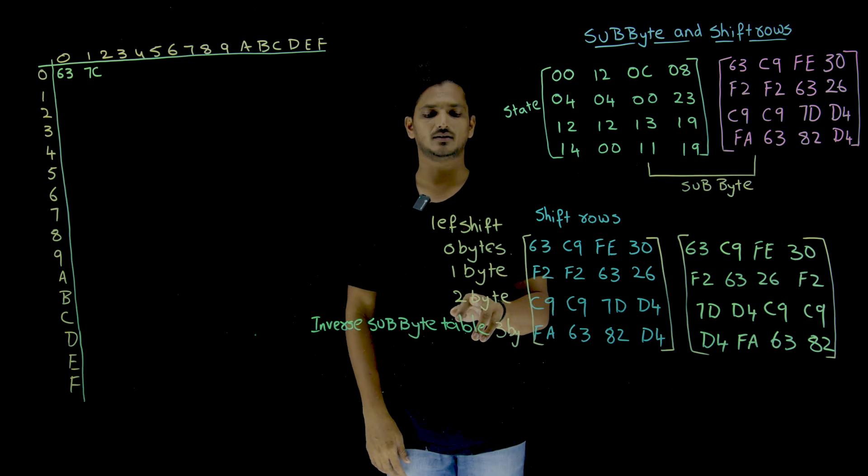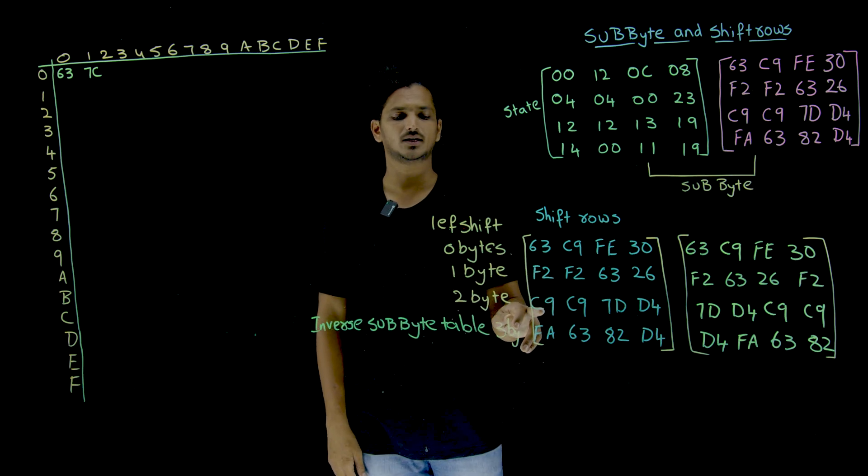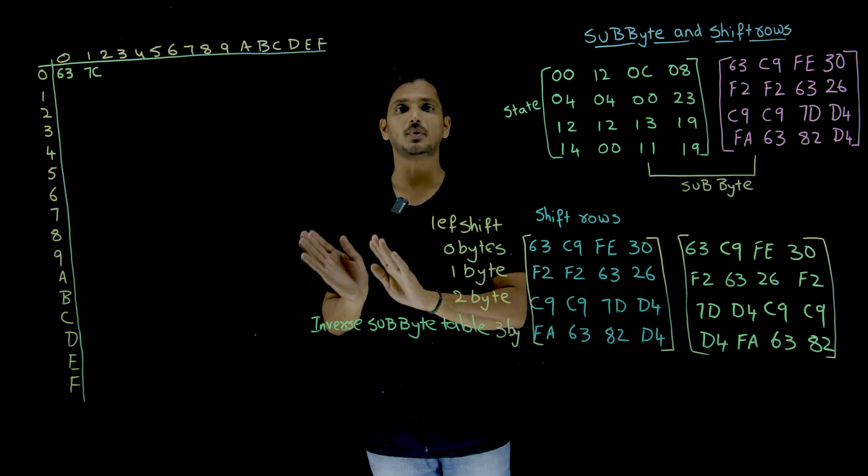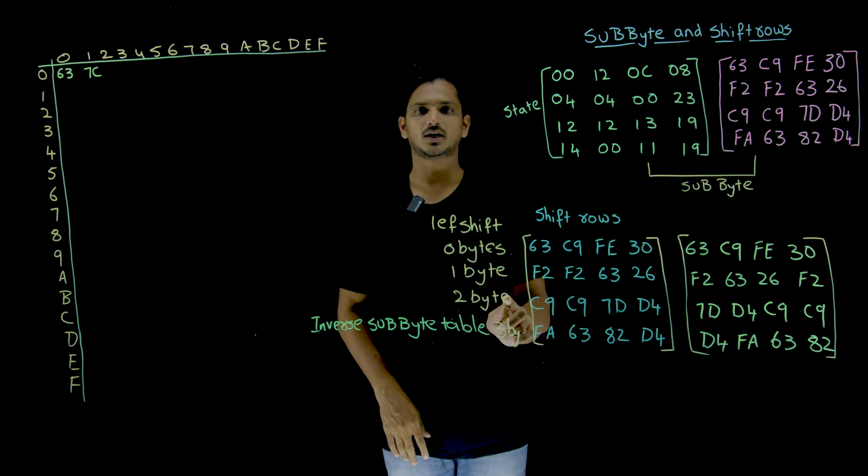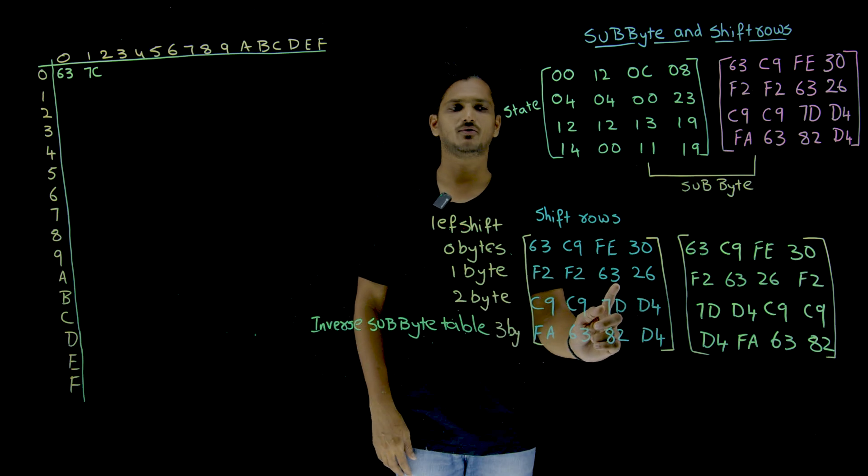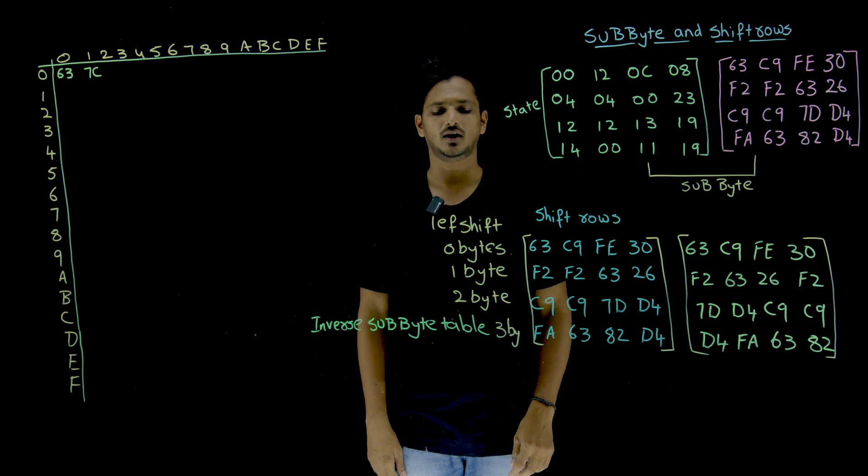Similarly, the second line, this is the second line. The third line is going to be shifted two bytes. Means C9, C9 come out. This goes to the front. That is why 7D, D4, C9, C9.